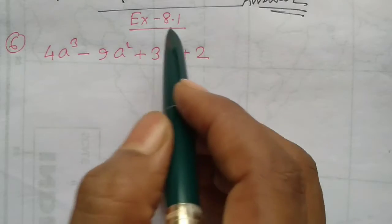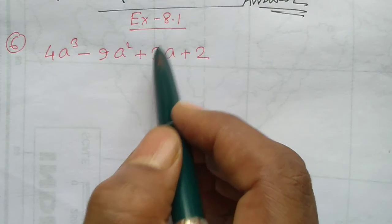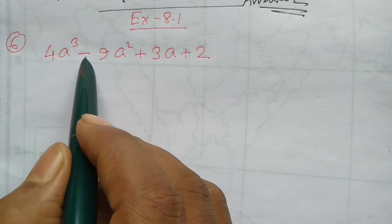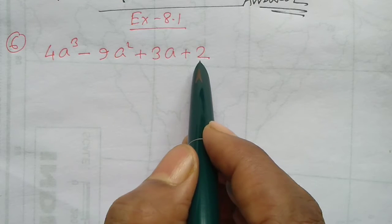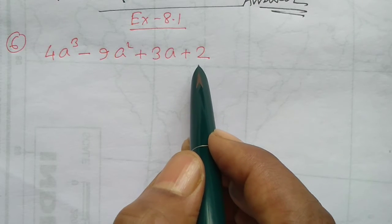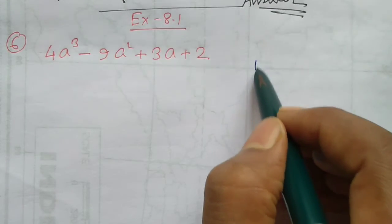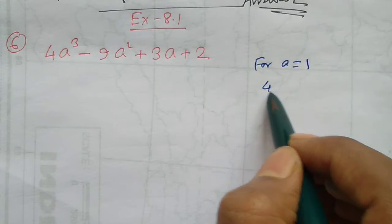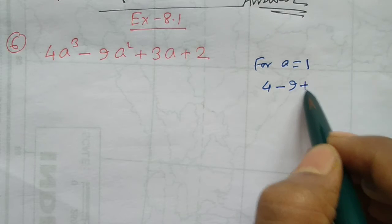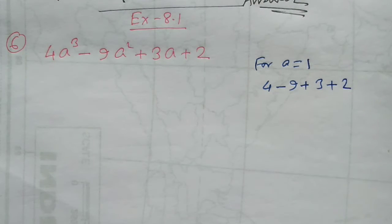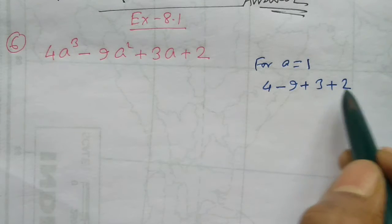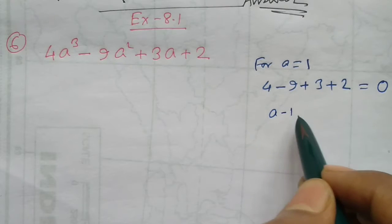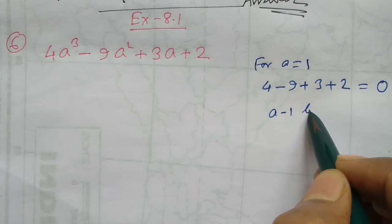Now let's work out the next problem from chapter 8. If we take a equals to 1, we get 4 minus 9 plus 3 plus 2, which equals 0. So (a minus 1) will be a factor.